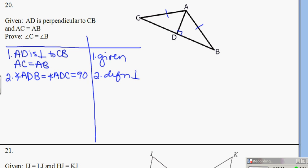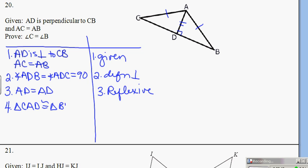Since I have a right triangle and I know the hypotenuse, I'm going to look for one of the legs to be equal. In this case I have that reflexive side: AD equals AD by reflexive. I can say triangle CAD is congruent to triangle BAD by HL — I know the hypotenuse and the leg. Then I get my angles: angle C is equal to angle B by CPCTC, as a corresponding part of the triangles I have now proven congruent.